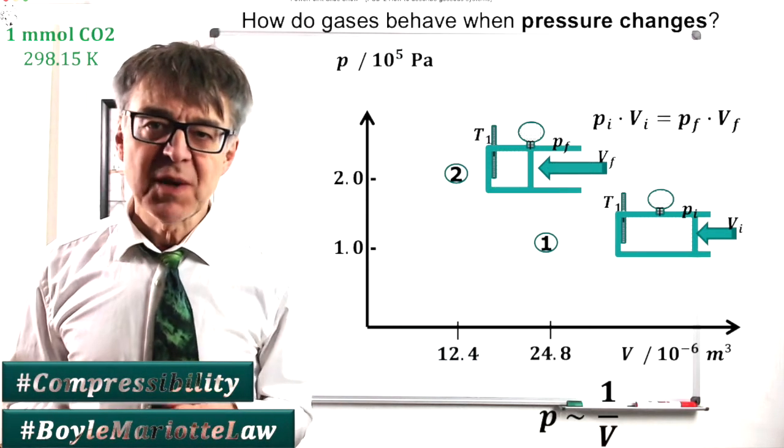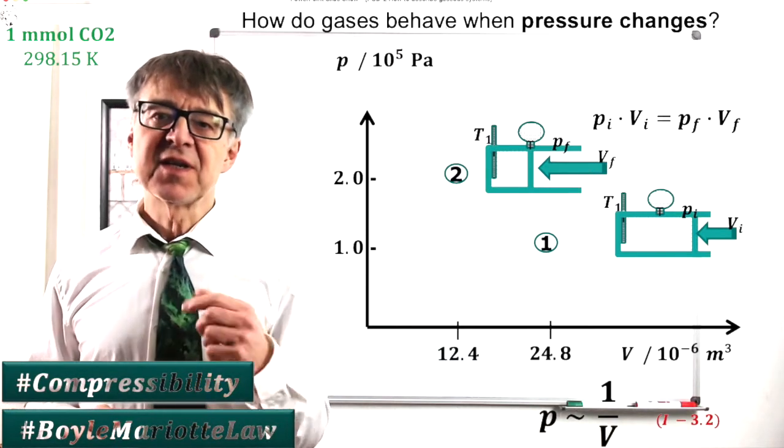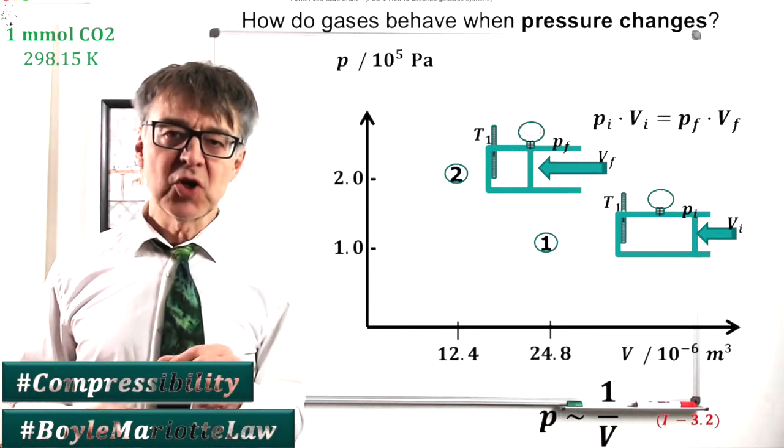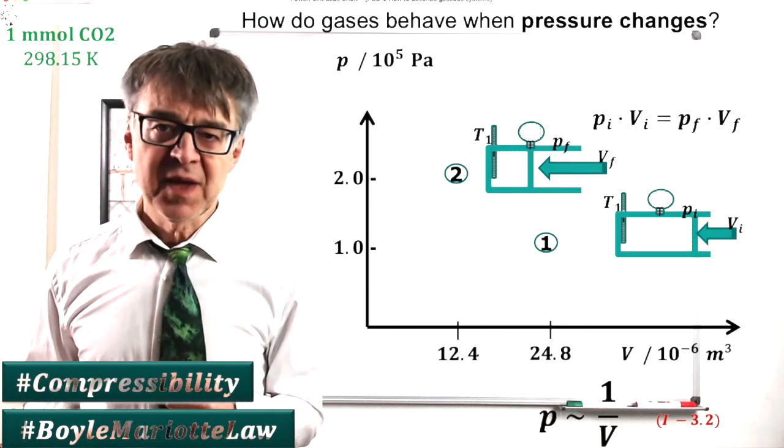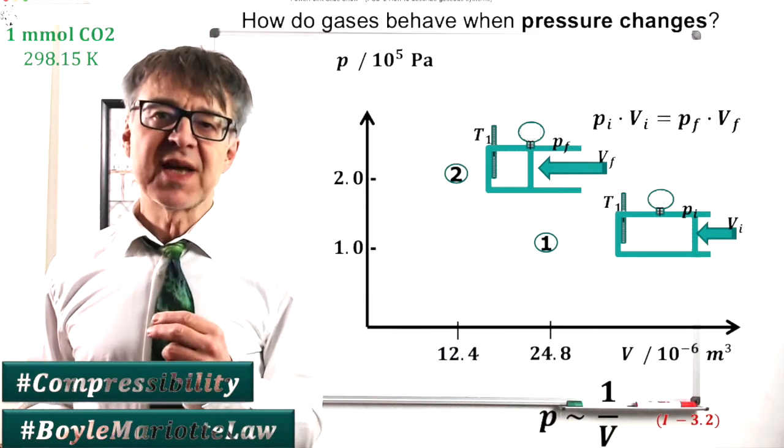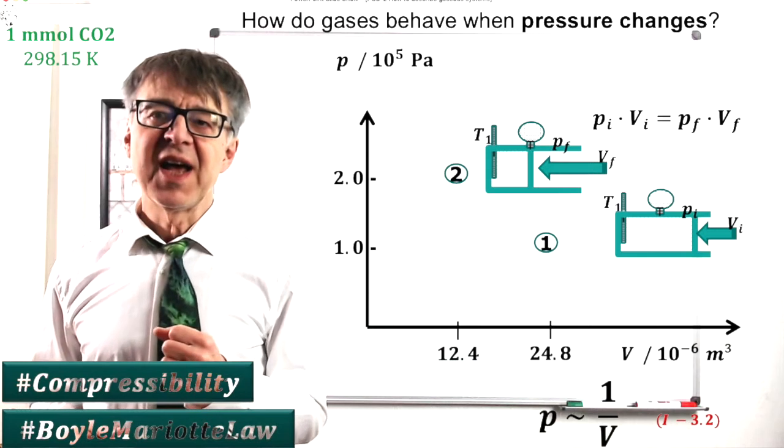Doubling the pressure results in a decrease of the volume to half of the initial value. In mathematical terms, P times V is constant. Pressure and volume are inversely proportional. This equation is known as the law of Boyle and Marriott.